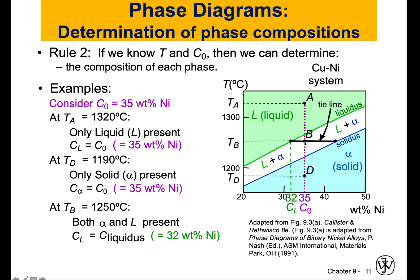Now I want to find what my solid phase is made of. I will go to the intersection with the solidus line and draw a line to intersect with the x-axis, and I will find that I have 43% nickel. So in this two-phase region, the liquid is made of a different concentration of nickel and copper as opposed to the alpha solid phase, which has a different concentration. To find those concentrations, I use the tie line and the intersections with the x-axis.